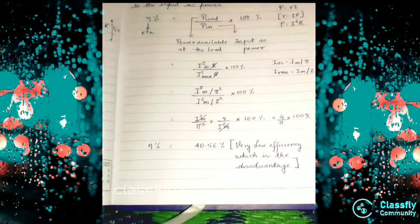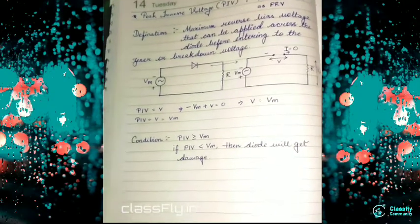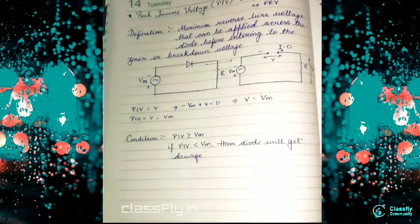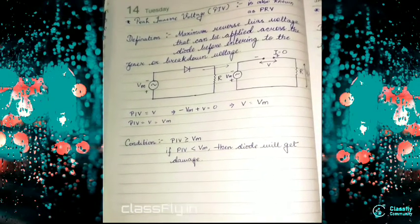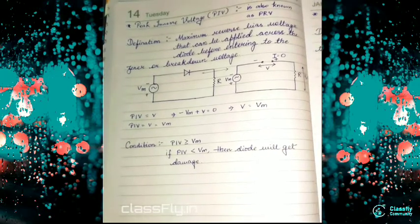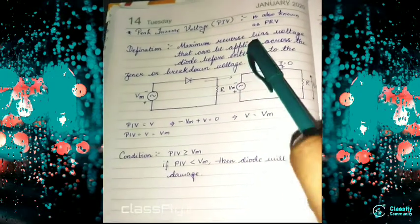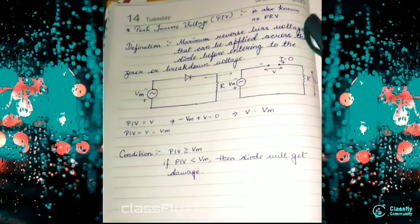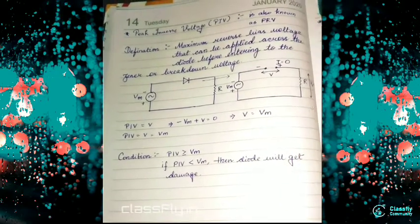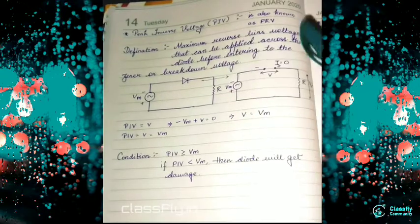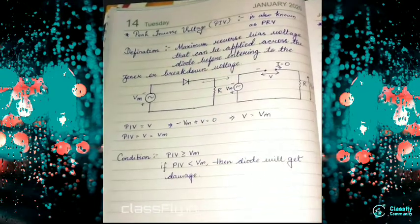Now we will move on to PIV. PIV means peak inverse voltage, also known as PRV. Definition: Maximum reverse bias voltage that can be applied across the diode before entering the Zener or breakdown voltage.